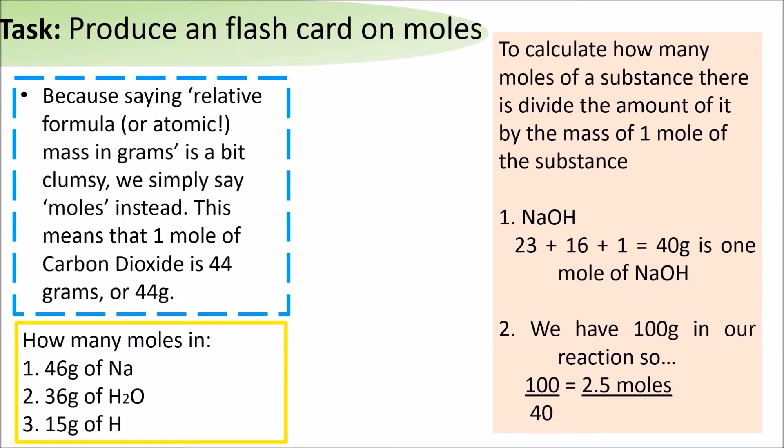if you are asked to work out how many moles of sodium hydroxide there is in 100 grams, we work out that one mole of sodium hydroxide weighs 40 grams. So, in 100, you are going to have 100 divided by 40, which will give you 2.5 moles of sodium hydroxide.